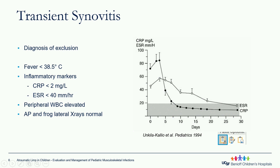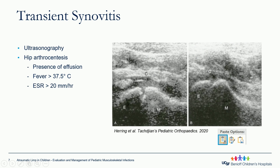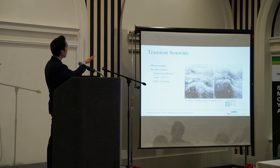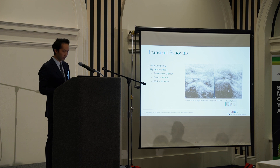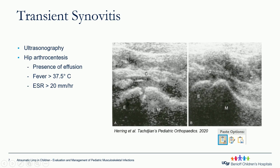Typical imaging: X-rays are usually normal for transient synovitis. Ultrasonography is usually obtained as well. Here you can see the femoral epiphysis and metaphysis — here is the joint capsule, and you can see an effusion just in front of the femoral metaphysis, compared to the contralateral side where the effusion is not seen. You can see the arrow on the left picture showing the effusion. Usually about five millimeters of difference compared to the other side is considered positive.